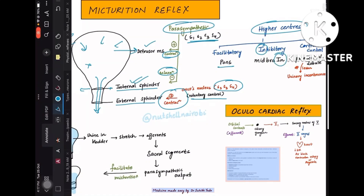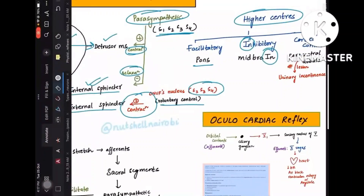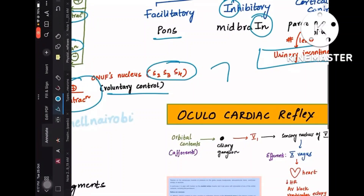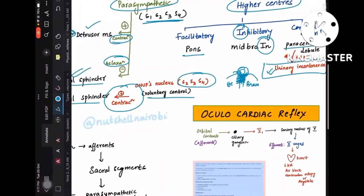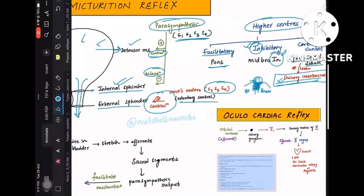Higher centers controlling micturition: the facilitatory center is the pons, and the inhibitory center is the midbrain. The cortical center is the paracentral lobule — lesion in the paracentral lobule leads to urinary incontinence because the bladder area is represented there in the homunculus.